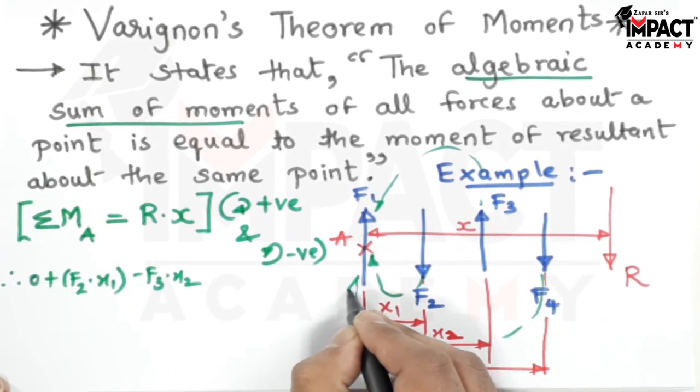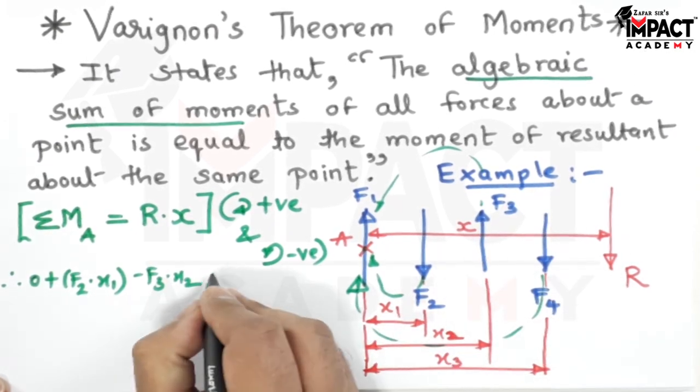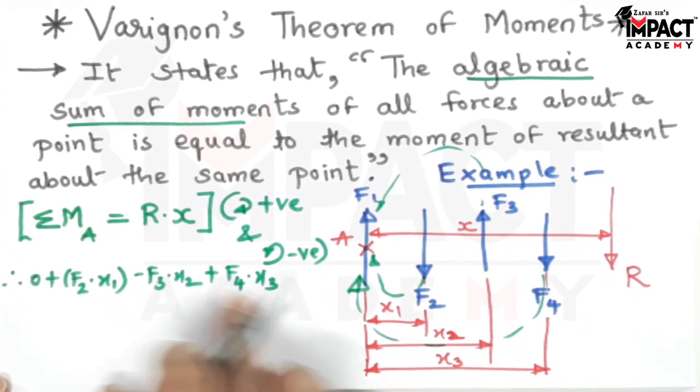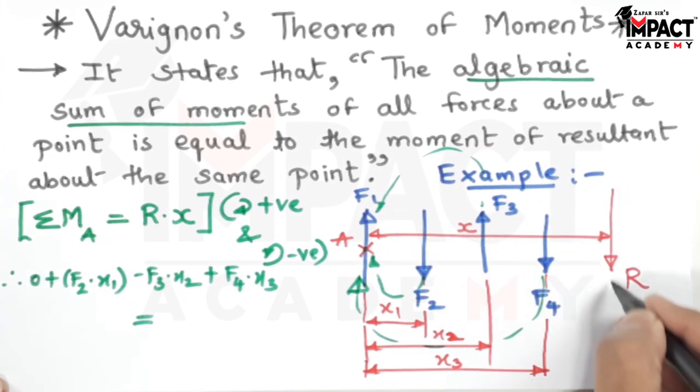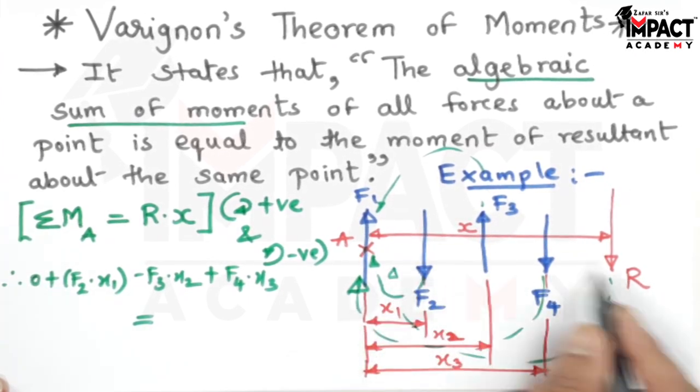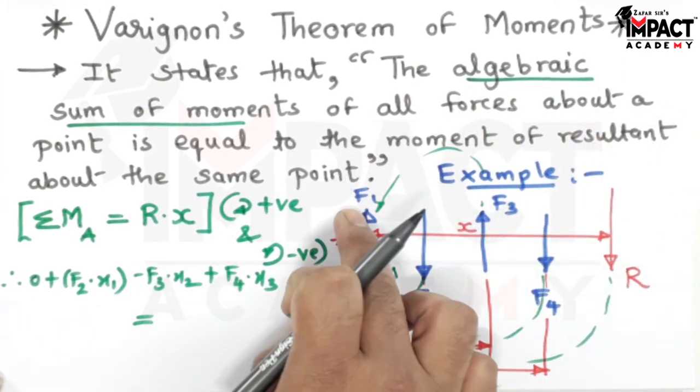Now these are the algebraic sum of moments, which is the left-hand side. Onto the right-hand side we have resultant. Since it is also acting in downward direction, when I take the moment at A it would be clockwise, so treated as positive. If R would have been upward, then it would have been negative here because of anti-clockwise moment.